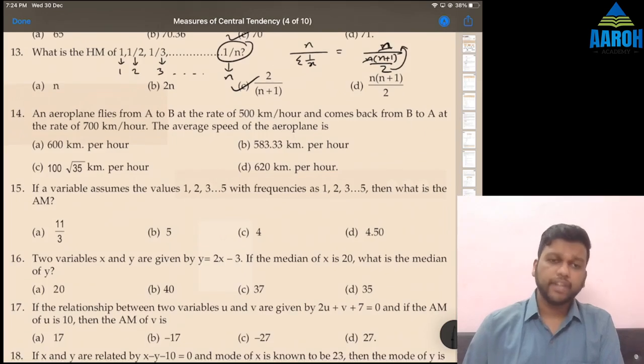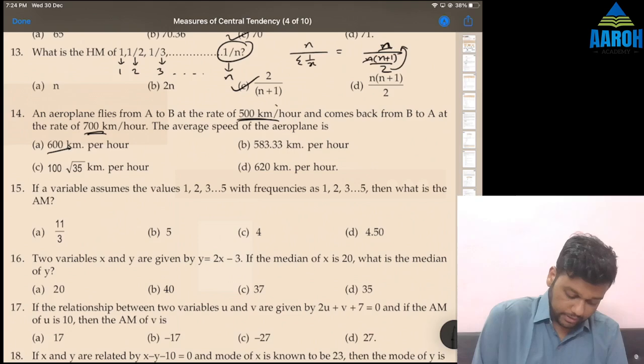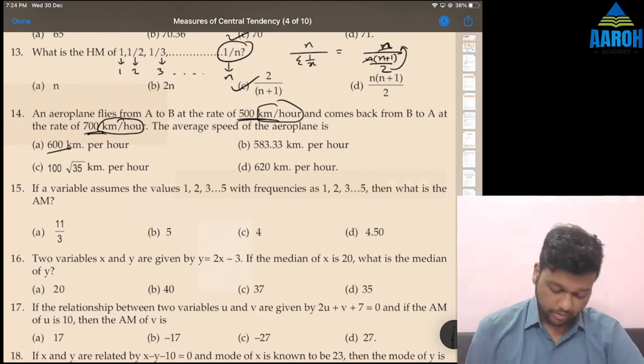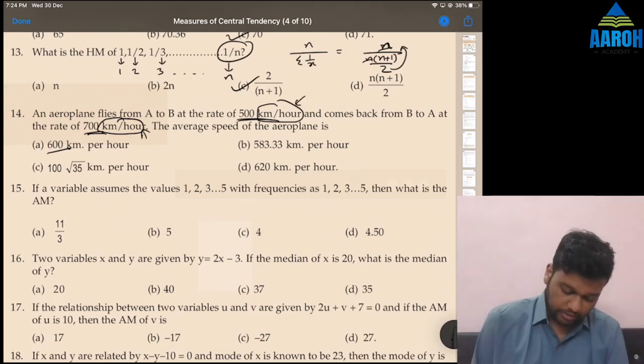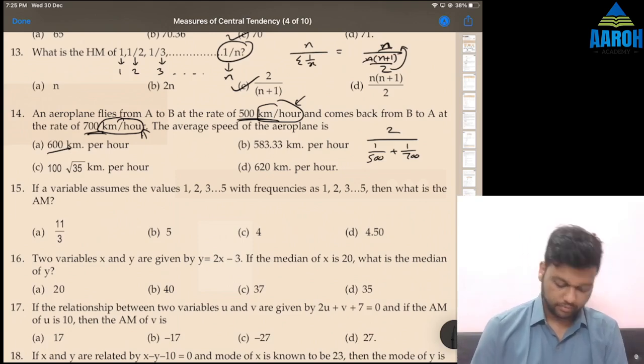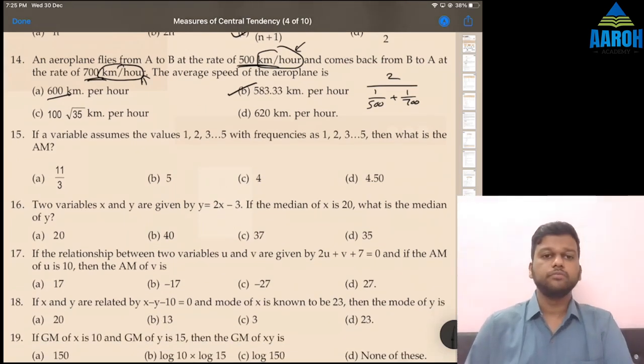An aeroplane flies from A to B at the rate of 500 kilometers per hour and comes back from B to A at the rate of 700 kilometers per hour. Average speed of the aeroplane is. 600 seems to be the average, but that is not correct because here we cannot use AM. This is kilometers per hour. So which measure of central tendency should be used? HM, correct. Because this is rate and not growth rate. So HM will be N, which is 2 upon 1 by 500 plus 1 by 700. That's 583.33, the correct answer.